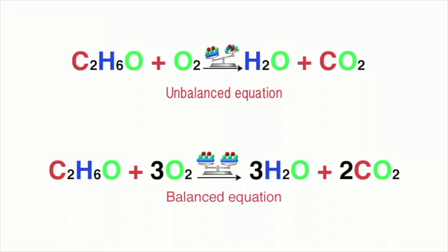However, the numbers of hydrogen and of carbon atoms differ on either side of the equation. There are six hydrogen atoms on the left side, but only two on the right. There are two carbon atoms in the reactants, but only one in the products.